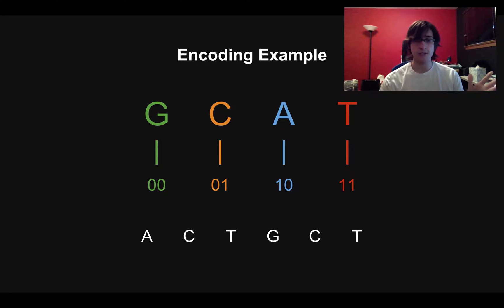So if I have a sequence like ACTGCT, like I do here at the bottom, what I would do is I would look up what two-bit thing is A, what two-bit thing is C, etc., and I could write down a binary string for the DNA. And this is how we would encode DNA using this very basic encoding scheme.